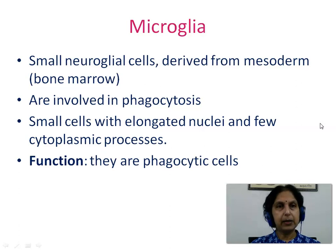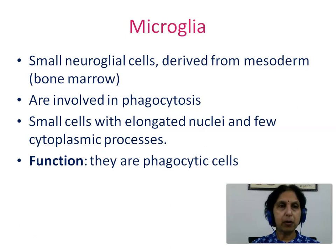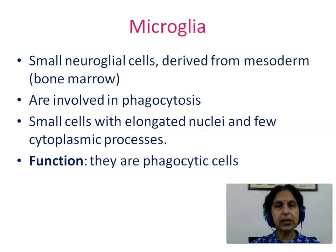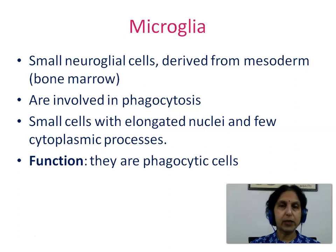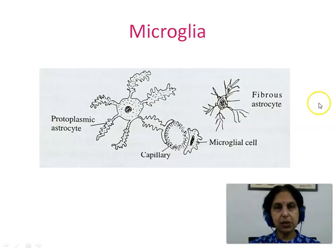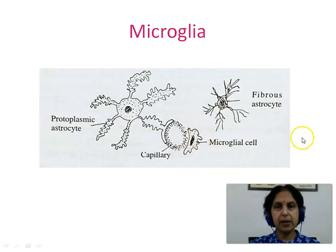Microglia are small neuroglial cells derived from mesoderm, that is the bone marrow. They are involved in phagocytosis — small cells with elongated nuclei and few cytoplasmic processes. These are phagocytic cells. This picture shows the microglia cell: a small cell with an elongated nucleus and some cell processes.